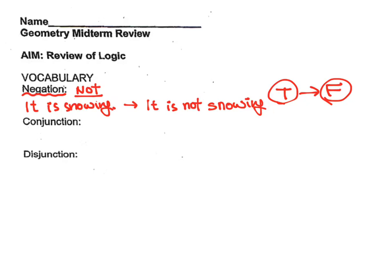On the other hand, conjunction. Conjunction basically uses the word AND many times. So we can say, 'I'd like to have hamburger AND pizza.' Do you see the word AND?